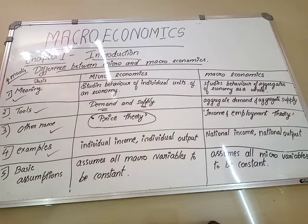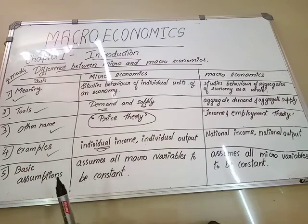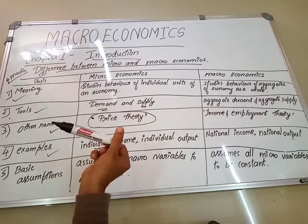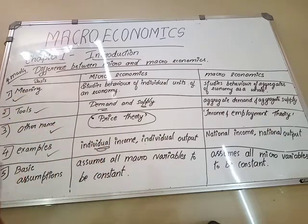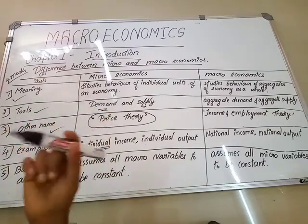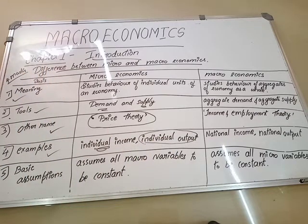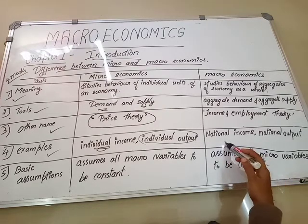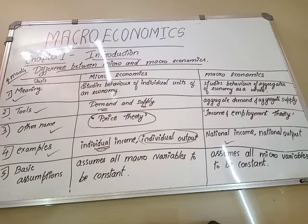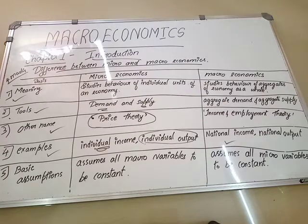Fourth difference: examples. Examples of microeconomics include individual income — the income of each individual — and individual output, meaning how much one particular firm supplies to the market. For example, how much Rorito markers alone is supplying — that individual output comes under microeconomics. For macroeconomics, examples include national income — the total income calculated for the whole country — and national output, meaning the total output coming to the market from all firms combined. That is the study of aggregates, so it belongs to macroeconomics.